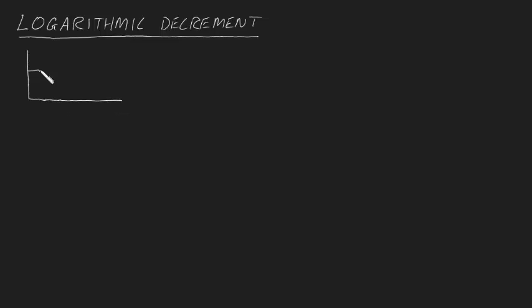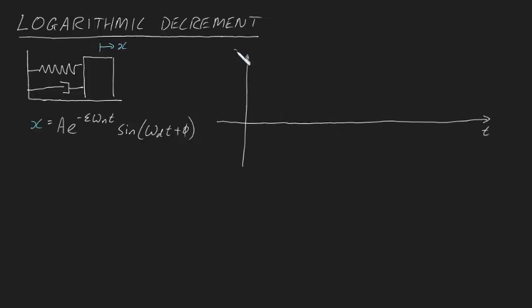Now we've already derived the equation of motion for a spring mass damper system for underdamped motion, and that was given by x equals a e to the power of minus zeta omega n t times sine omega d t plus phi. If you were to plot this out you'll get a sine wave with an exponentially decaying amplitude.